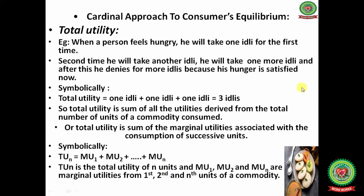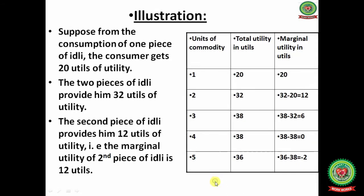Cardinal approach to consumer's equilibrium: this approach helps explain how a consumer can derive maximum utility from a given money income. The utility function symbolically is U = f(x1, x2, ..., xn), where U is total utility and n is the number of commodities. With every successive unit of idli, total utility continuously increases to a point and then starts decreasing, while marginal utility continuously decreases, reaching zero and then becoming negative.